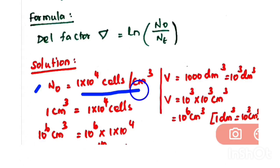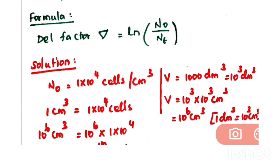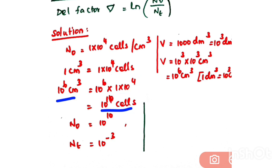N0 = 1×10^4 cells per cm³. The volume is 1000 dm³ = 10^3 dm³. Since 1 dm³ = 10^3 cm³, then 10^3 dm³ = 10^3 × 10^3 = 10^6 cm³. Therefore, 10^6 cm³ of medium contains 10^6 × 1×10^4 = 10^10 cells. So N0 = 10^10.